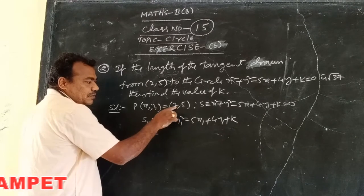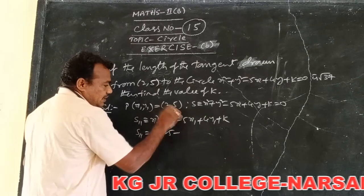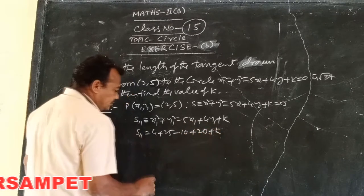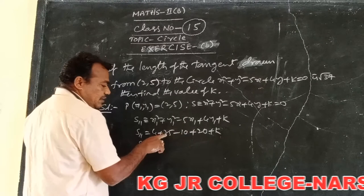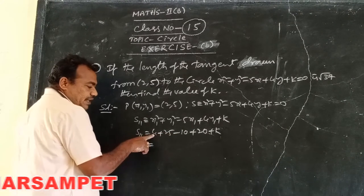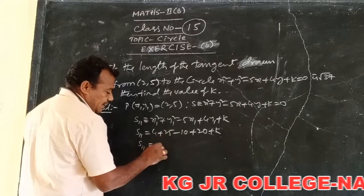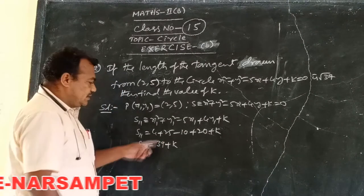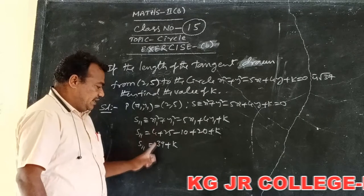Put x₁ = 2, y₁ = 5: x₁² = 4, y₁² = 25, minus 5×2 = 10, plus 4×5 = 20, plus k. Simplifying: 4 + 25 = 29, plus 20 = 49, minus 10 = 39. So S₁₁ = 39 + k.